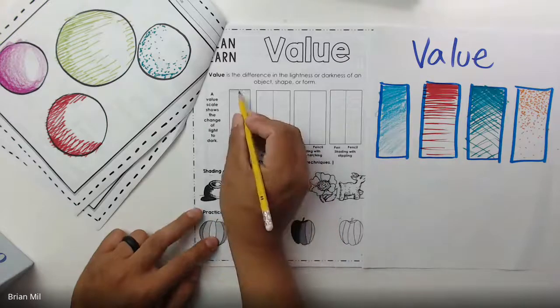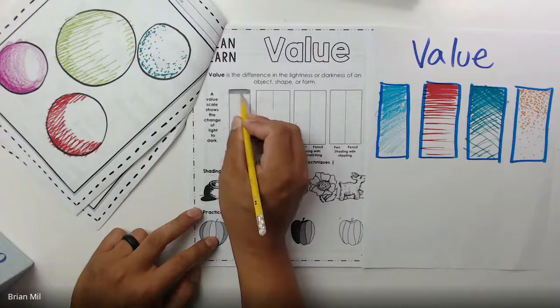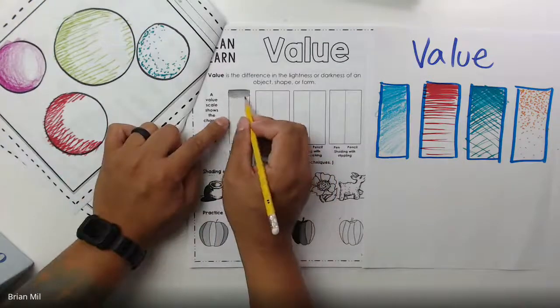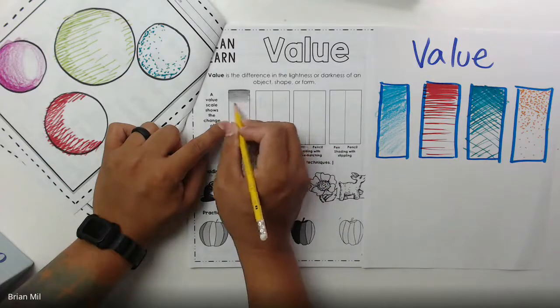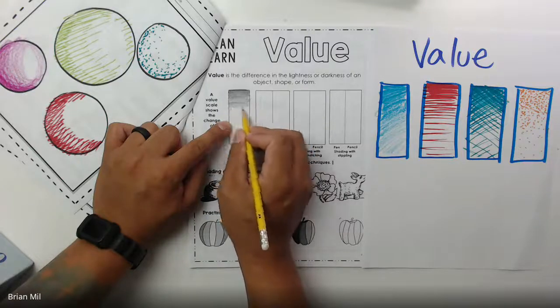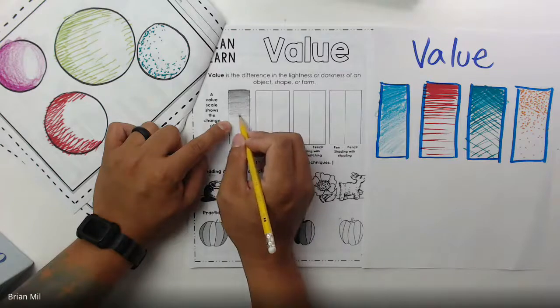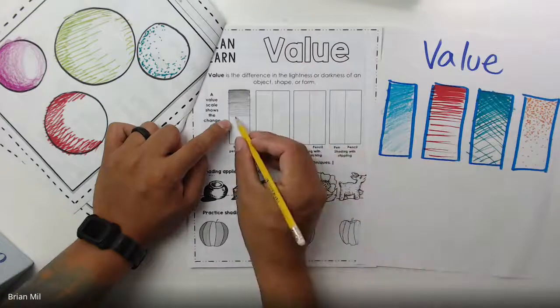So the first rectangle will be a pencil value scale. We're going to go inside. We're going to press decently hard, and we're going to kind of go back and forth. And as we go to the middle, you're going to press lighter and lighter so you have a nice and even gradient of gray. Again, if you don't have a pencil, this might work with pen, and it'll definitely work with crayon because I did it in crayon earlier.